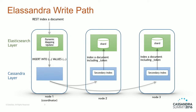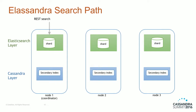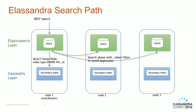On the search path: you request a search on the Elasticsearch layer, which is then broadcast to all shards in the data center. We added a token filter to avoid duplicate results — if your replication factor is greater than one, you may have duplicate results, and the token filter avoids this. Back on the coordinator node, from the IDs returned by the search, we fetch the requested fields from the Cassandra layer. For example, if we request the source of a document, it issues a SELECT with all fields from Cassandra, and sends back the JSON document as a response to the client.